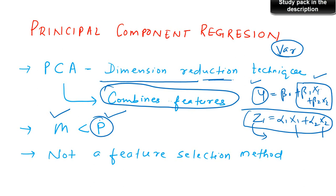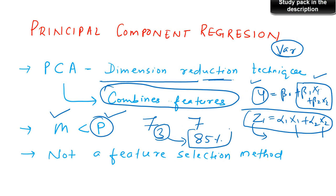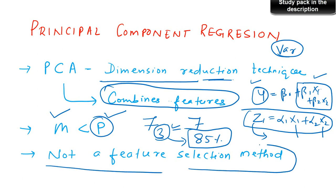What is recommended is to use a very small number of principal components. Say you have seven features and therefore seven principal components — just see how many actually maximize or explain the maximum variance of y. If three principal components explain 85% of the variation, it's always good to go ahead with only three instead of seven, because that reduces the dimension. PCR is not a feature selection method because we are not selecting features.